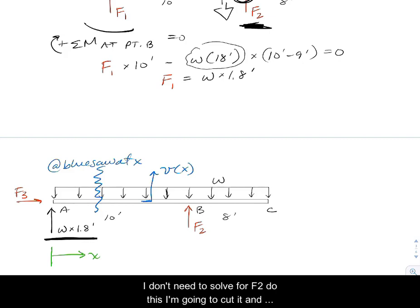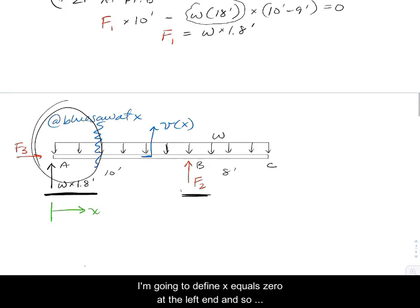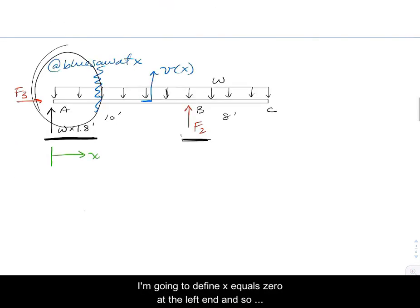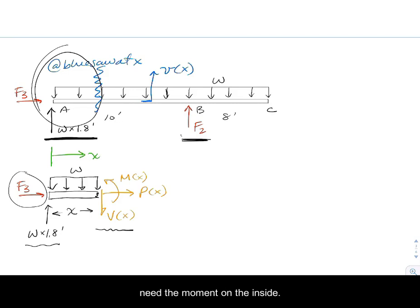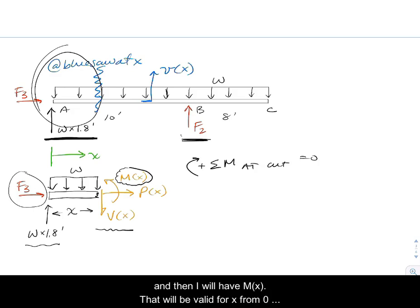I'm ready to now cut this beam open. I don't need to solve for F2 to do this. I'm going to cut it and use the free body diagram on the left-hand side. I'm going to define x equals 0 at the left end. When I cut that beam at a distance x, I now have exposed inside shear, axial, and moment. There's my reaction and the unknown F3 reaction force. To do the second order beam equation, I need the moment on the inside. I don't have to solve for all the other forces here. All I need to do is spin a moment right at the cut, and then I will have m of x valid for x from 0 to 10.